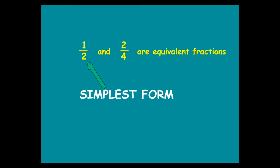Now, the one on the left in this case is the fraction in its simplest form. Simplifying a fraction just means giving it in the form which is simplest to understand, simplest to use, and so on. And you notice that when you have a small numerator — top number — and small denominator — bottom number — the fraction is easier to understand and easier to use.